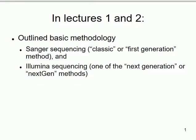Today we have another block of two hours and I'll take a break about halfway through. We're going to follow on from the last lectures which introduced the concept of DNA sequencing, talked about why sequencing is useful, and looked at two methods: Sanger sequencing, sometimes called classic or first generation sequencing, and Illumina sequencing, often referred to as a next generation or next gen method. There are lots of next gen methods — any high throughput methods that generate large amounts of sequence data fairly rapidly are collectively referred to as next gen.